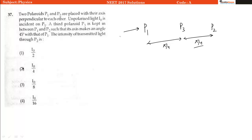Here the intensity of light which is falling, that is unpolarized, is I naught. When it will pass the first polaroid it will have the intensity I naught divided by 2.